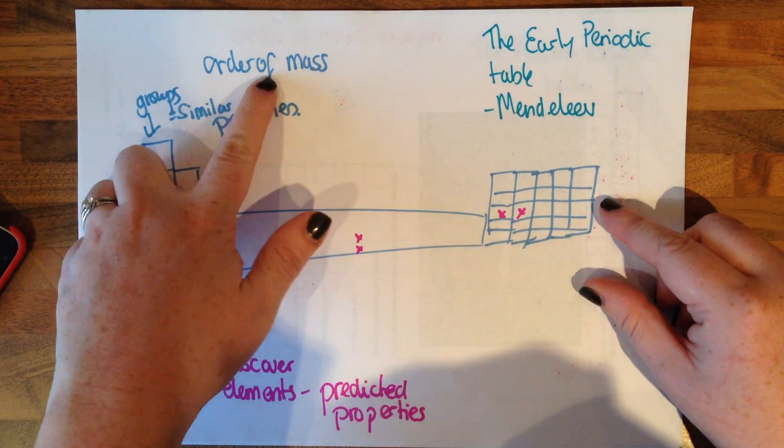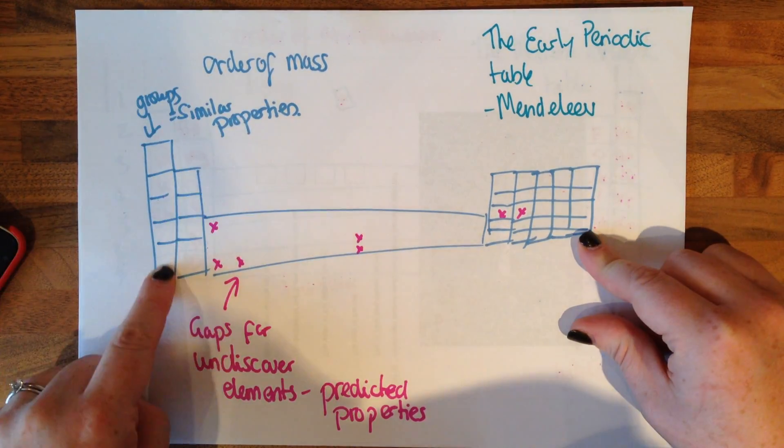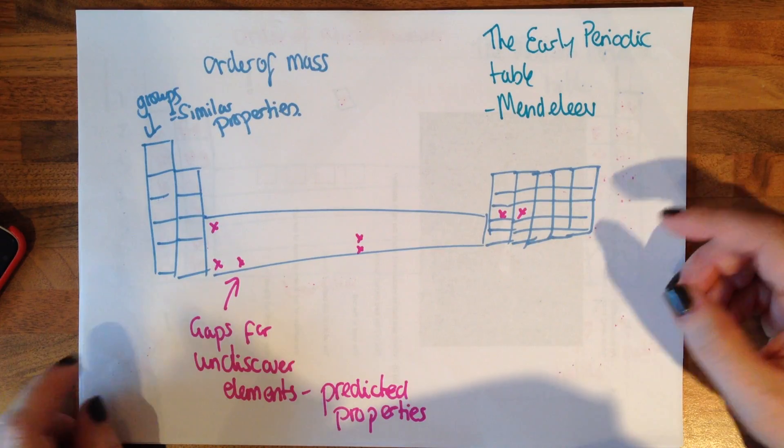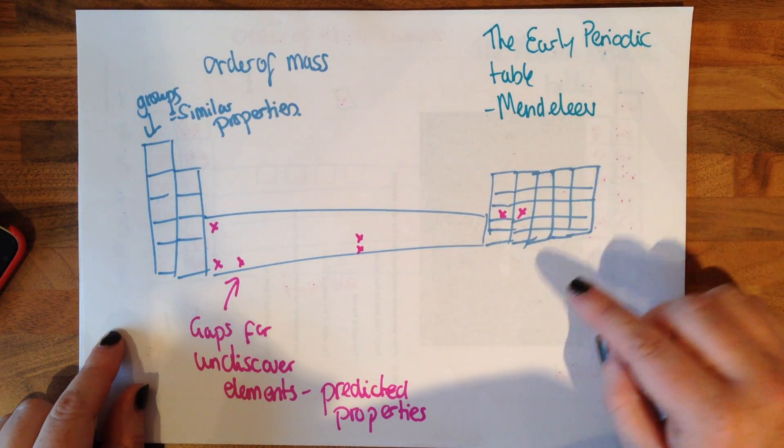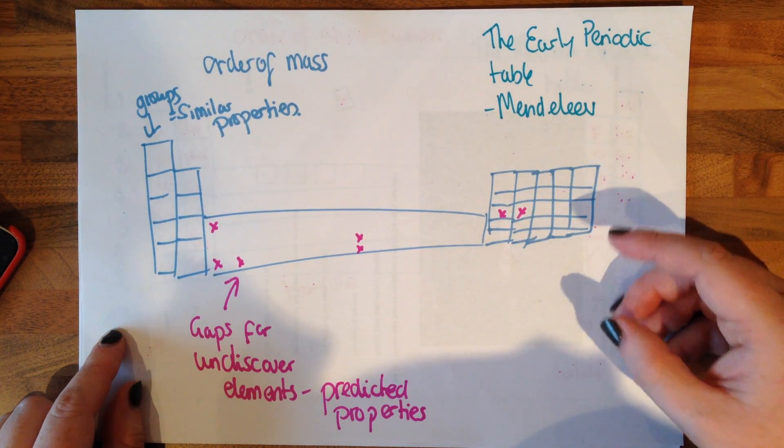And then Mendeleev came along. His periodic table, he ordered things in order of mass. He had groups and everything in the group had similar properties. And the key thing that Mendeleev did was he left gaps.